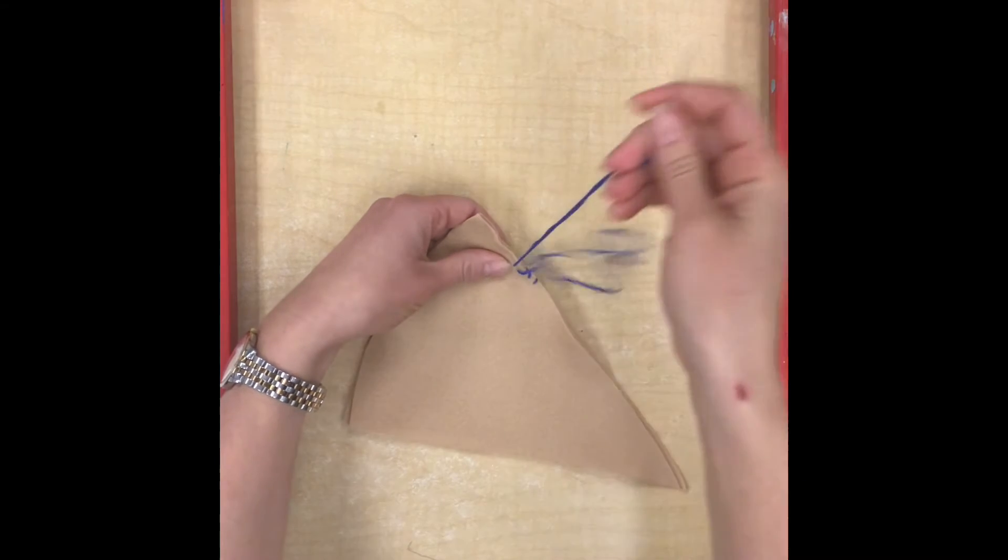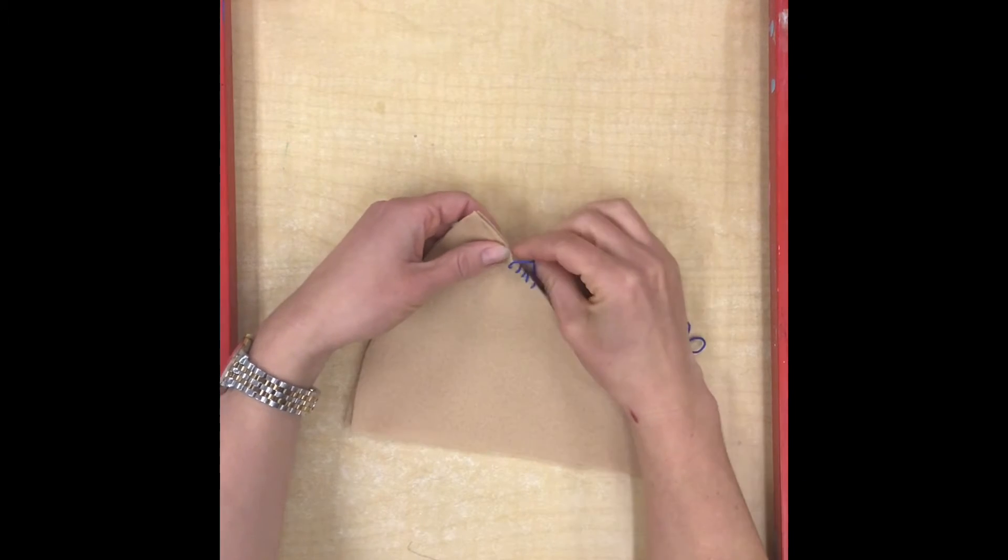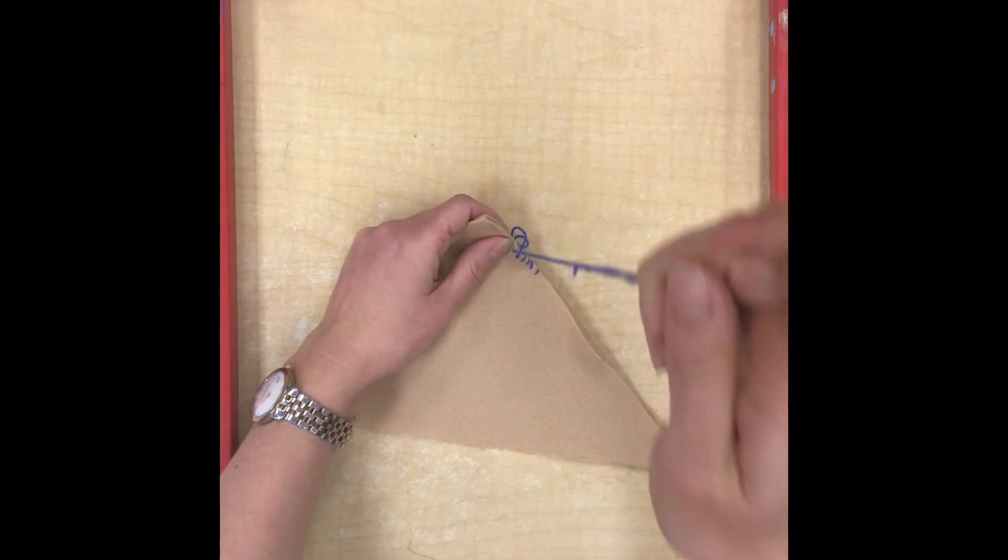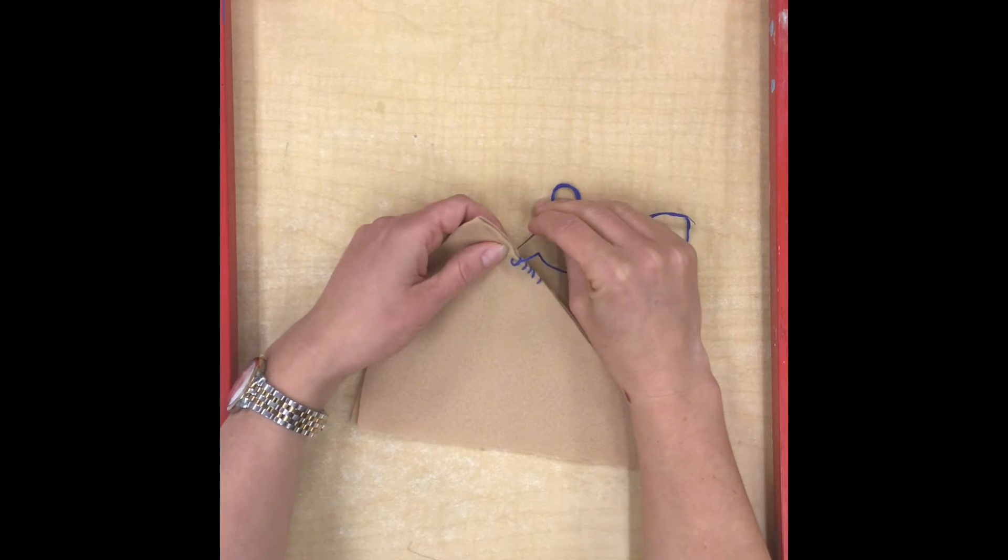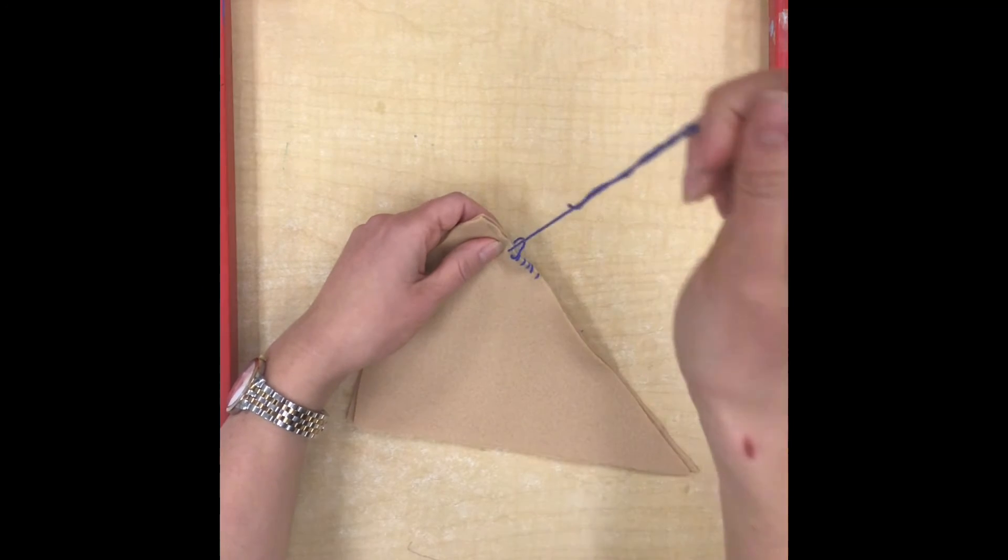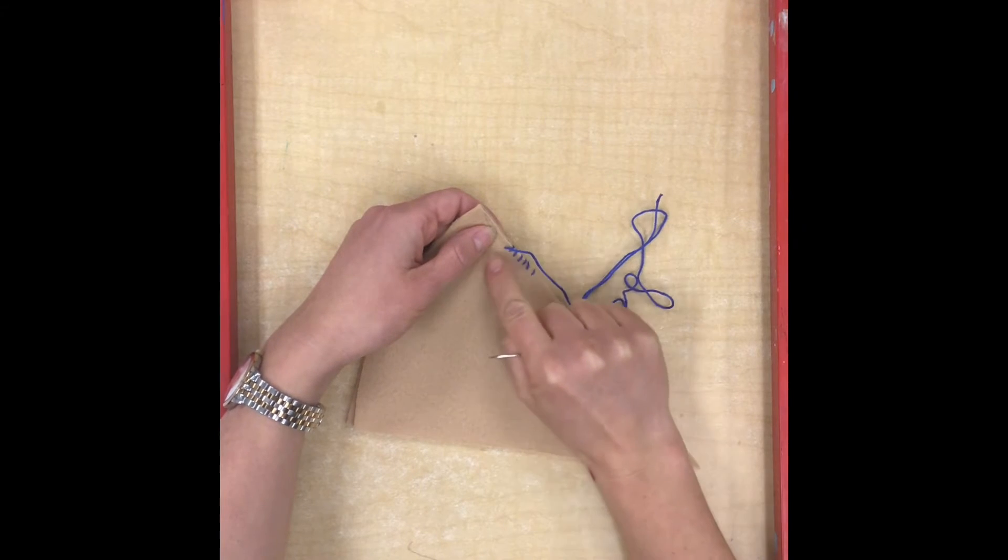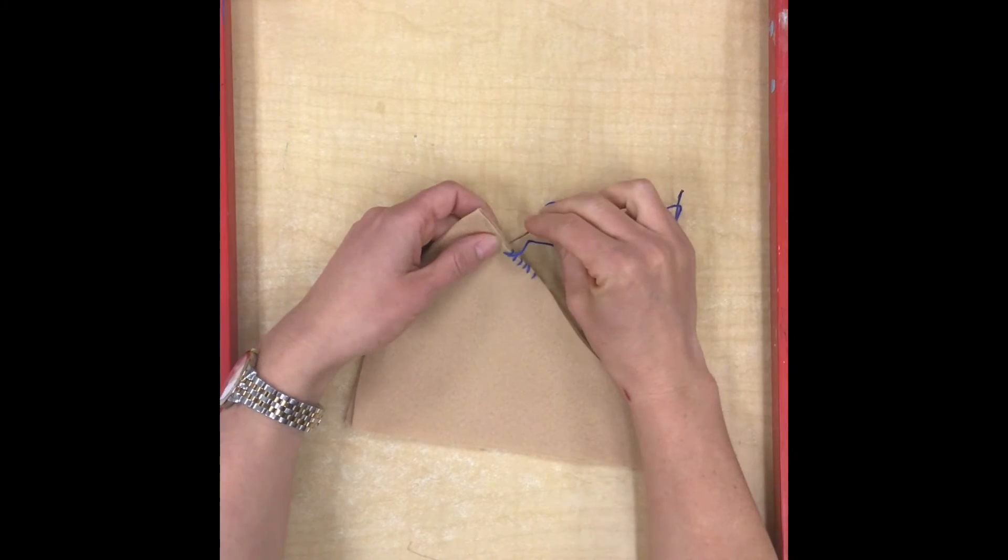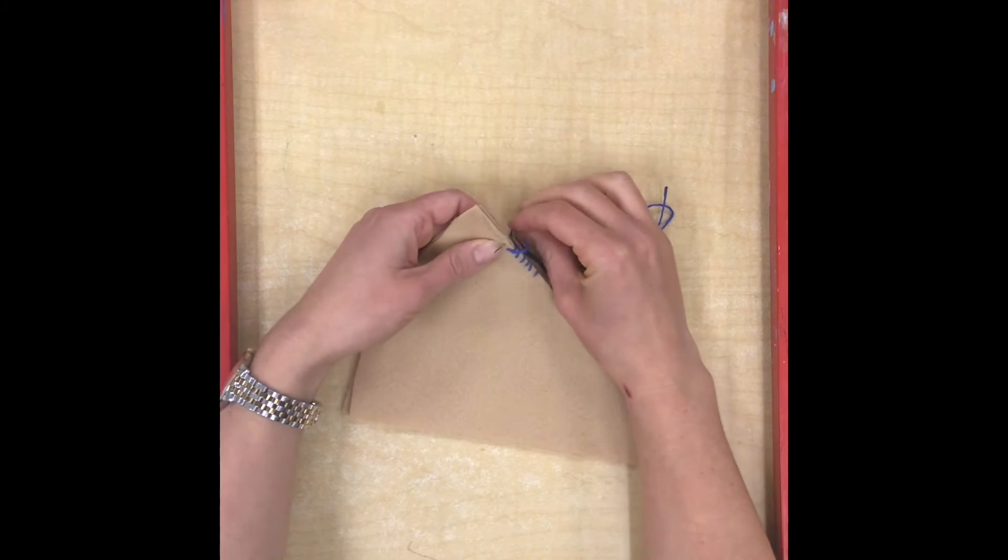Now once you get the hang of your stitches there are a couple things you need to keep in mind. First of all, people who sew take a lot of pride in making their stitches nice and neat. So that means basically you're trying to get all your stitches the same. You don't want one of them to be super short and the other one to be super long. You're trying to make each stitch pretty much identical to the others.